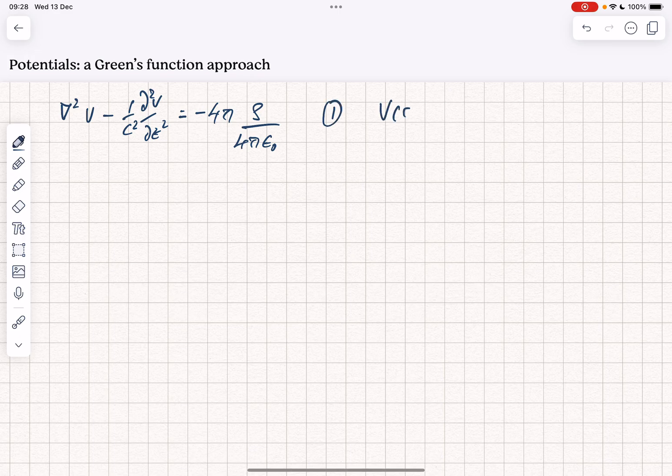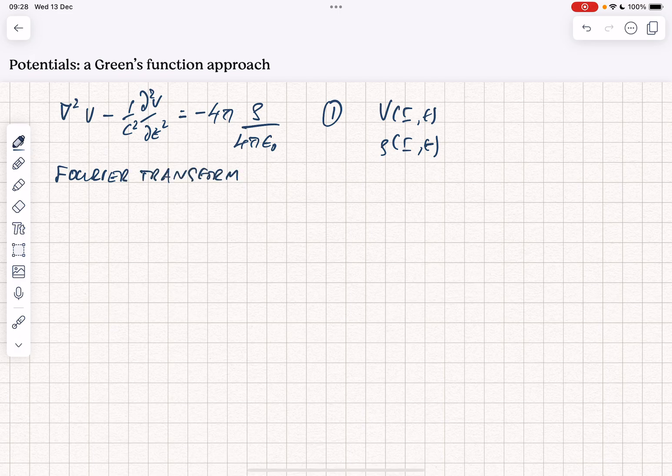I'm going to remind us that we have v of r and t, and rho of r and t. The first thing that we need to do is to do a Fourier transform in frequency space, so that we end up with a slightly different form. That gives us v of r comma omega.